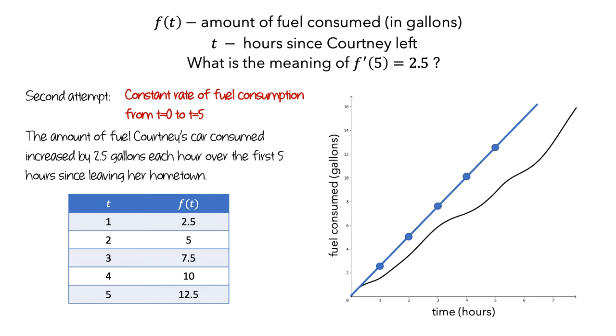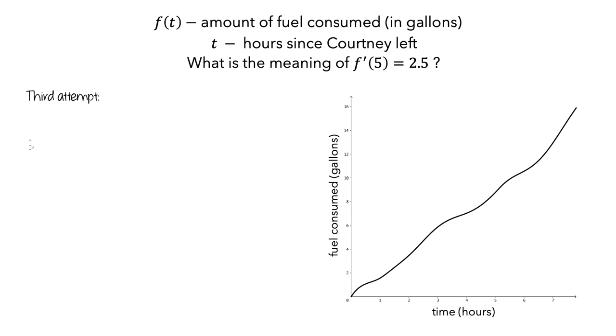Now, the 5 in f'(5) means that we're focusing on the value at t equals 5 hours, not over a 5-hour interval. So let's make another attempt. Here is another common description. Starting at 5 hours, during the next hour, Courtney's car will consume another 2.5 gallons of gas. This is an improvement because it's focusing on the 5-hour mark, and it's not claiming that the gas is necessarily being consumed at a constant rate.